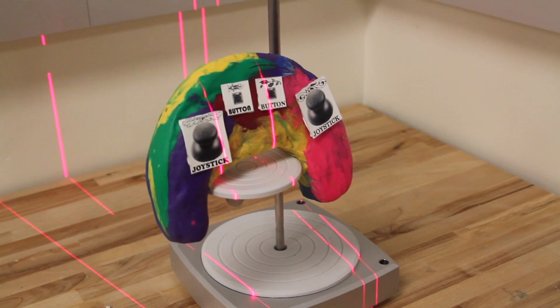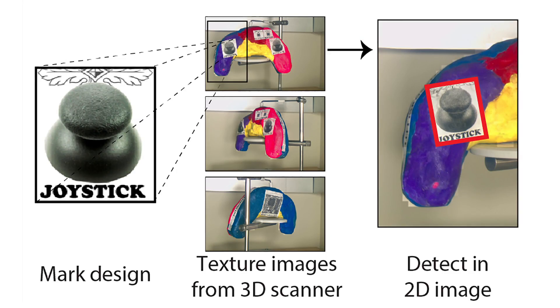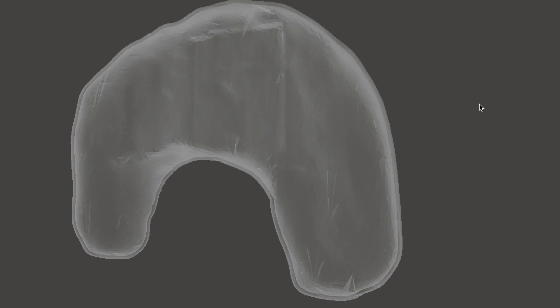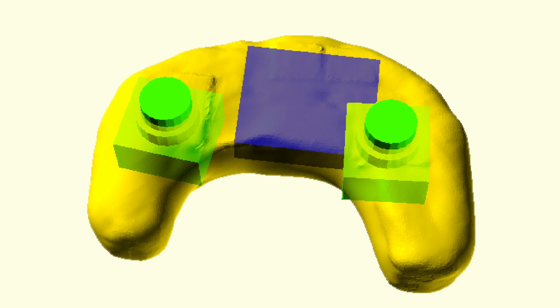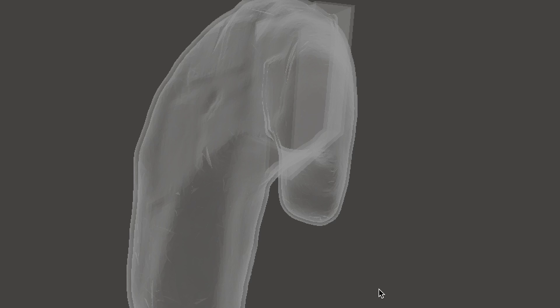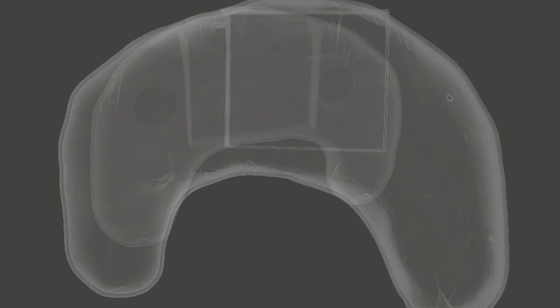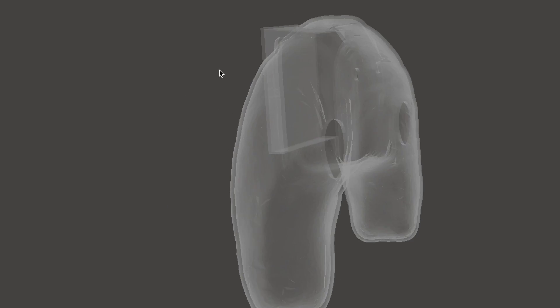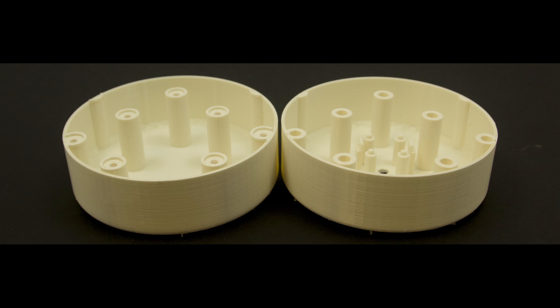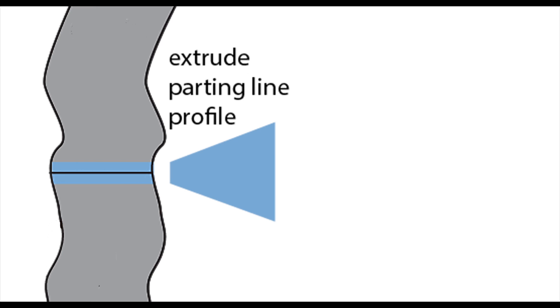When users scan their creation, Maker's Marks finds mark images in the scanner's texture images, locates the corresponding position in the scanned 3D model, and shells the object. If parts internally collide, Maker's Marks pushes them outward along their normals and adds a bounding box. Then it subtracts the associated clearance geometry and adds mounting geometry. To fasten the halves of the component's shell, Maker's Marks also has options for boss or lip generation.